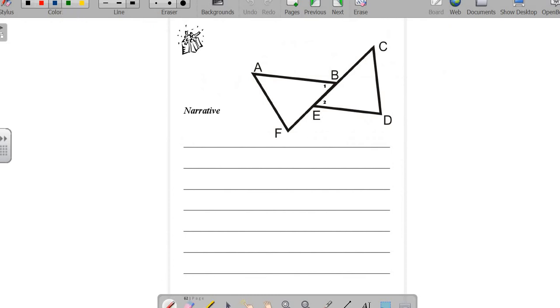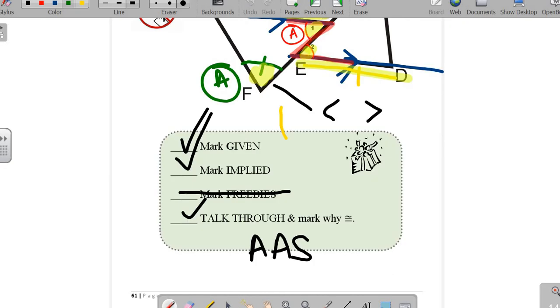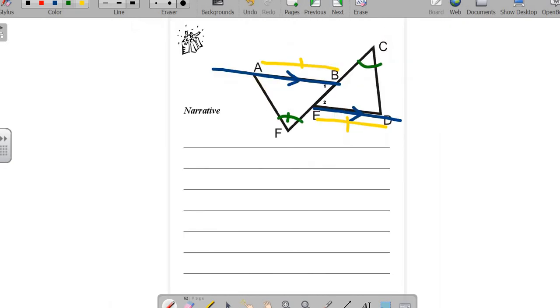So let's bring our markings back over here. And we're going to do what's called a narrative proof, which means a written proof. We had the parallel lines. We had AB congruent to ED. We were also told that F and C were congruent. And we got the armpits of the Z going on here. Angles one and two. And we determined already that we're dealing with angle, angle, side.